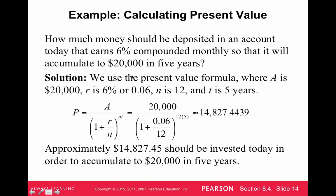I'll show you how to type this all in one line: $20,000 divided by 1 plus 0.06 divided by 12, to the power of 5 times 12. That gives us $14,827.44, so you would need to invest approximately $14,827.45. If you don't have that lump sum right now, that's what we cover in the next section — making a savings plan with regularly scheduled deposits of, say, $100 or $50.